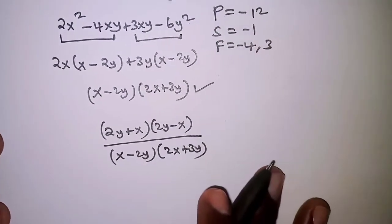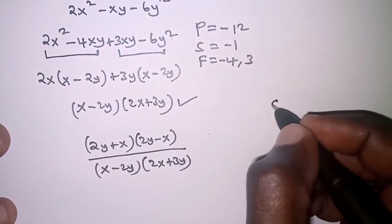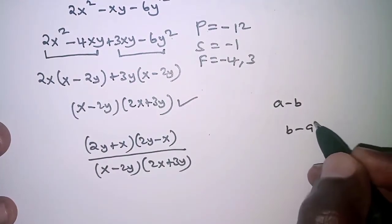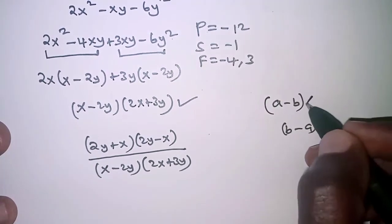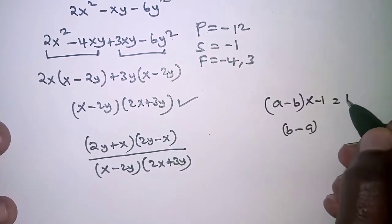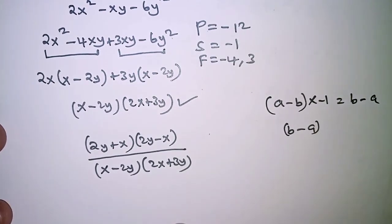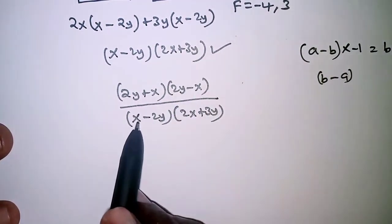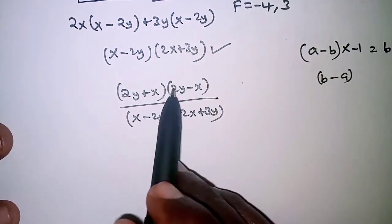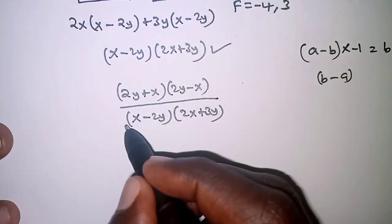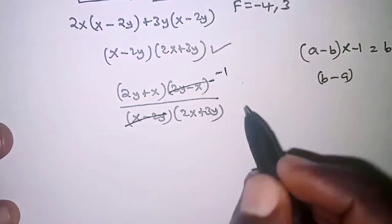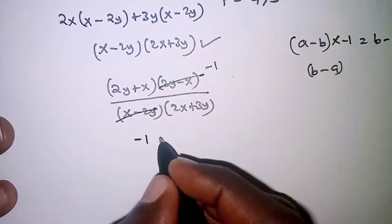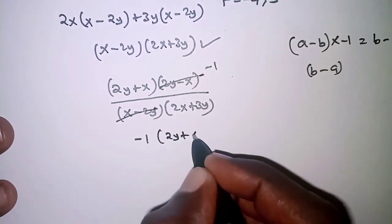Considering (2y - x) and (x - 2y), we need to note that if you have (a - b) and (b - a), one is the negative of the other. So (2y - x) and (x - 2y) are negatives of each other, meaning when they cancel you get -1. We now have -1(2y + x) / (2x + 3y).